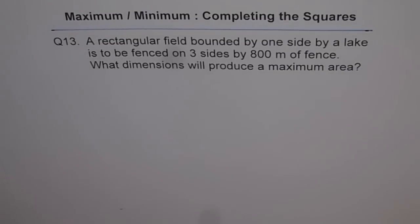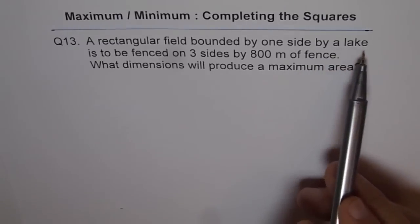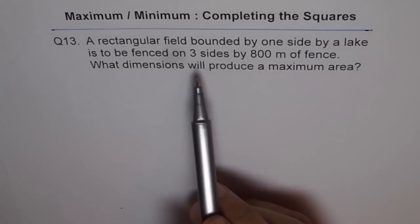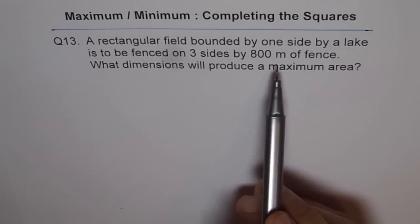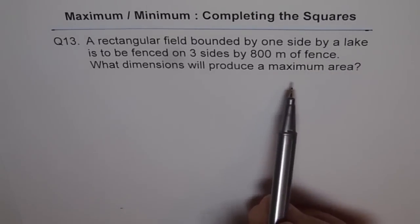Maximum minimum, completing the squares method. Question 13. A rectangular field bounded by one side by a lake is to be fenced on three sides by 800 meter of fence. What dimensions will produce a maximum area?